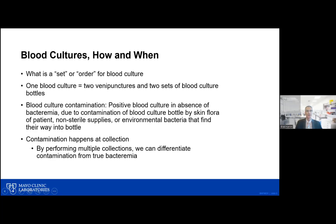Contamination happens at the point of collection and dosing of blood culture bottles — it really can't happen after that. That is the reason why one order for blood cultures contains two venipunctures. If we cleanse and disinfect the skin twice in two separate locations and draw blood on two separate occasions, if one happens to have a contamination, likely the other won't. We can help differentiate bacteremia from contamination because contamination is likely going to show one set positive for skin flora with the other set negative.